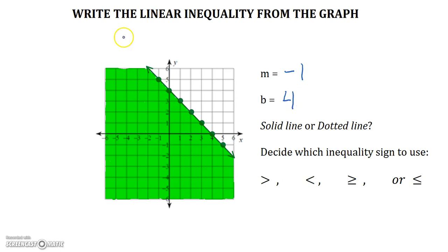Now, we go ahead and write out what we know. Y, blank, because we don't know the sign yet, negative x, or you could write negative 1x if that helps you, plus 4. Next step, solid or dotted line? This line is solid again. Therefore, again, we can eliminate these two choices of inequality signs.